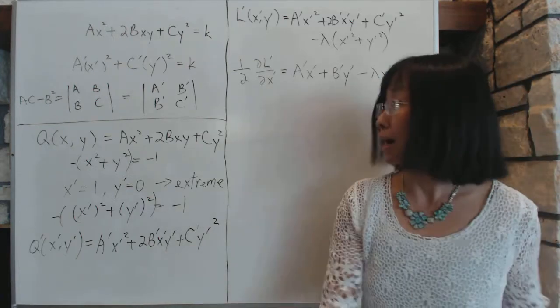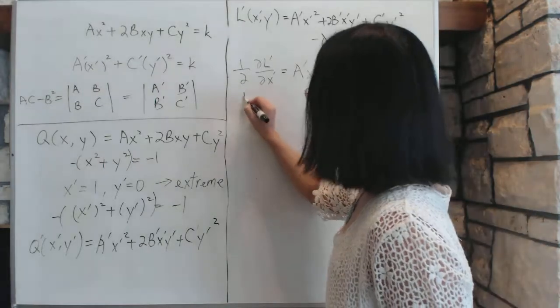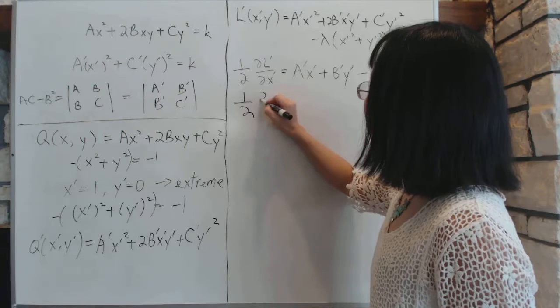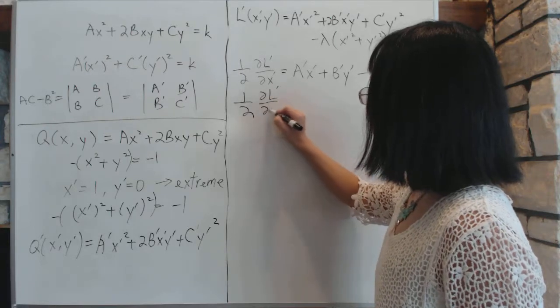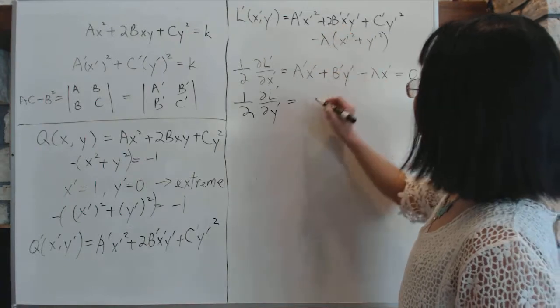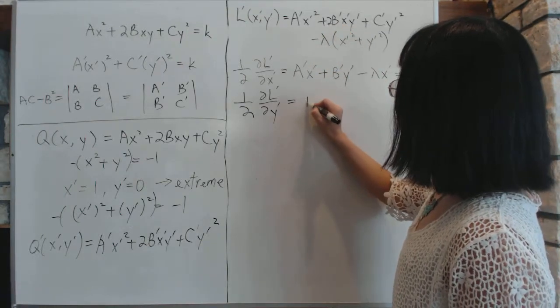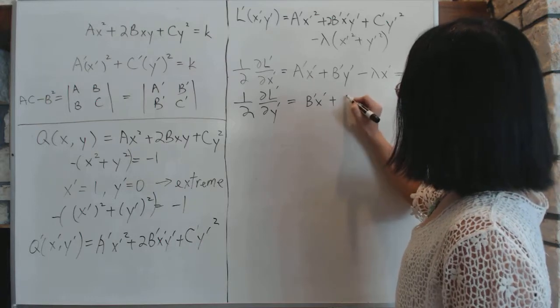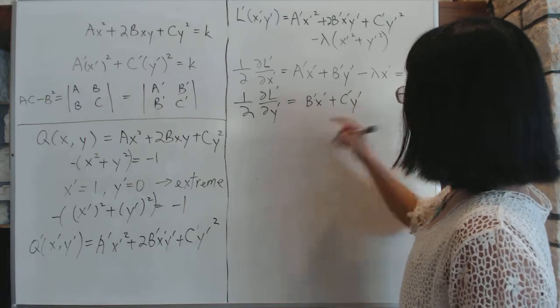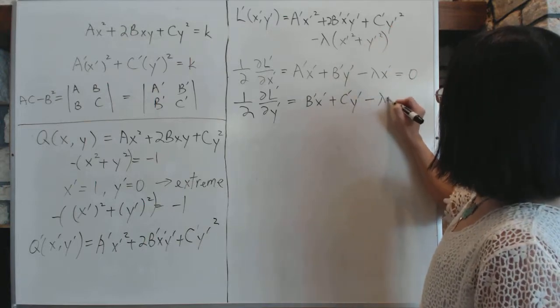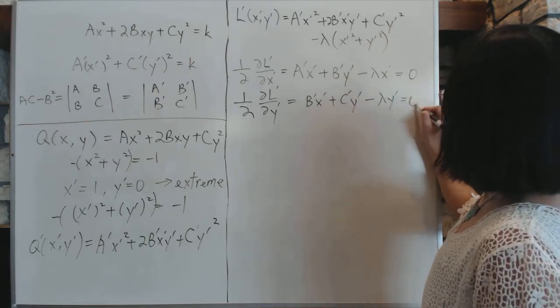And the same way with the y's, we'll do exactly the same thing. So partial, there's a two, partial L, partial y equal to, with respect to y we get b prime x prime plus c prime y prime, again the two is over there, all the twos from the derivatives, minus lambda y prime equal to zero.